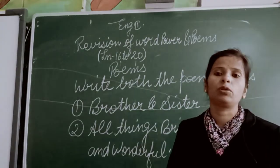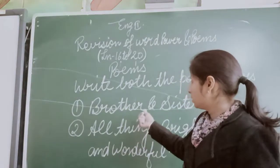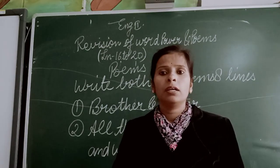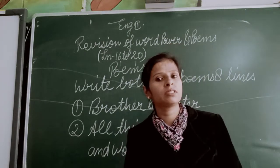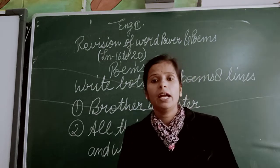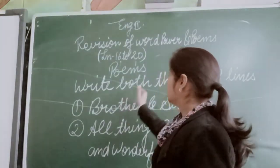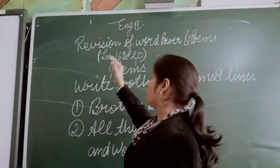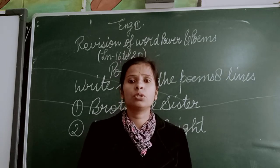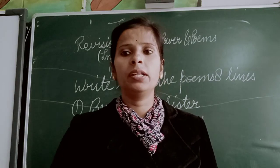Don't think that only one poem will come. Either 'Brother and Sister' can come, or 'All Things Bright and Beautiful' will come — there will be no option. So don't prepare only one; you have to write both poems, eight lines. For homework, our next class we will do the revision of word power and poem for lessons 11 till 15. Study well, learn well.